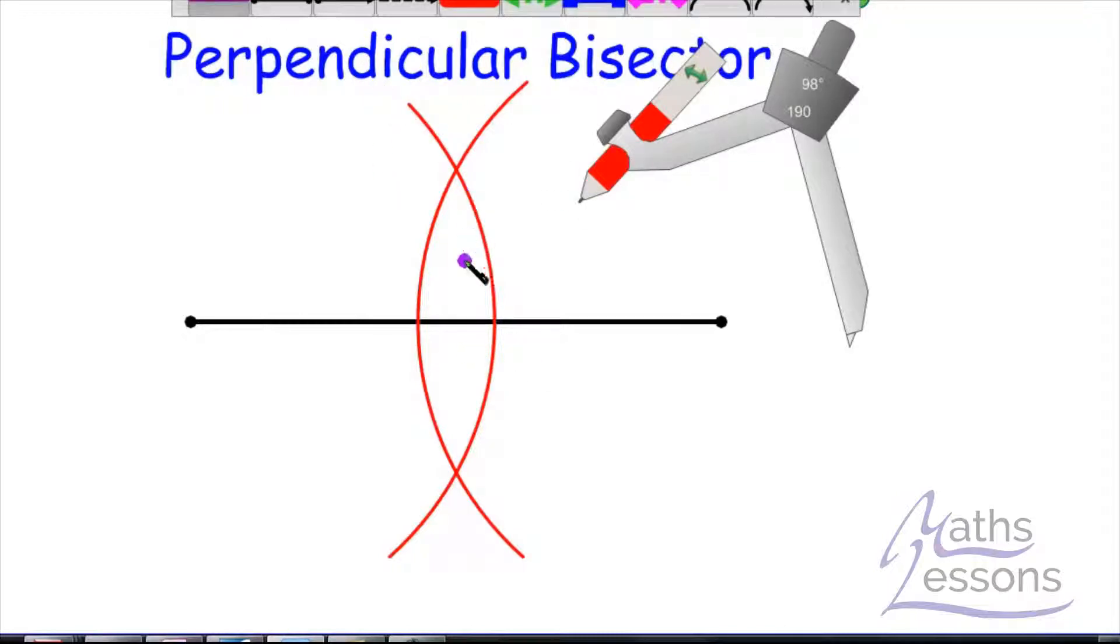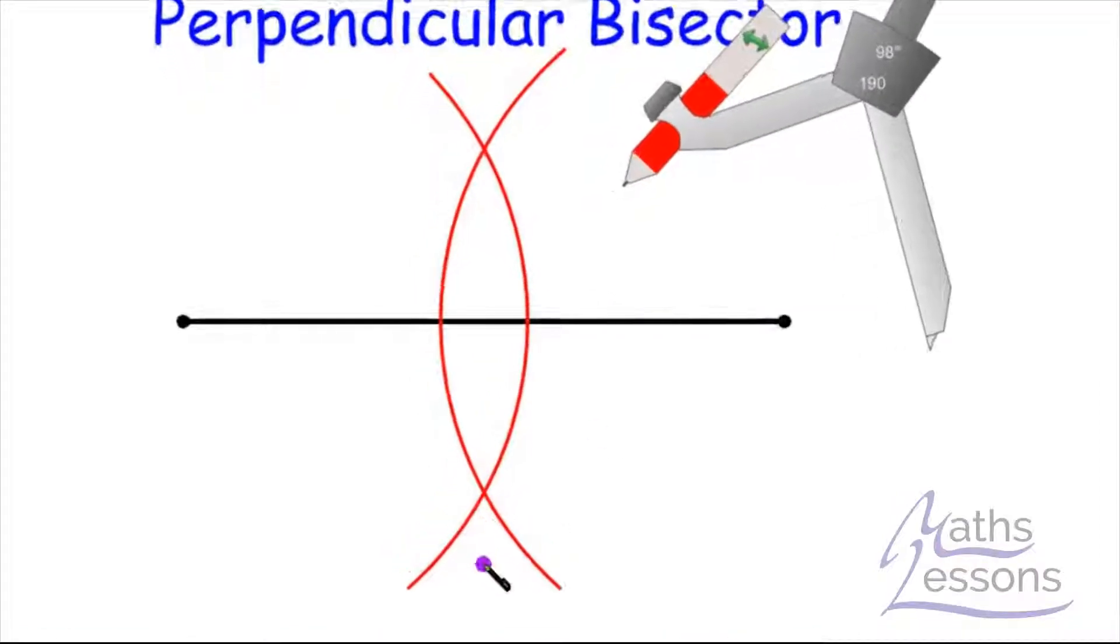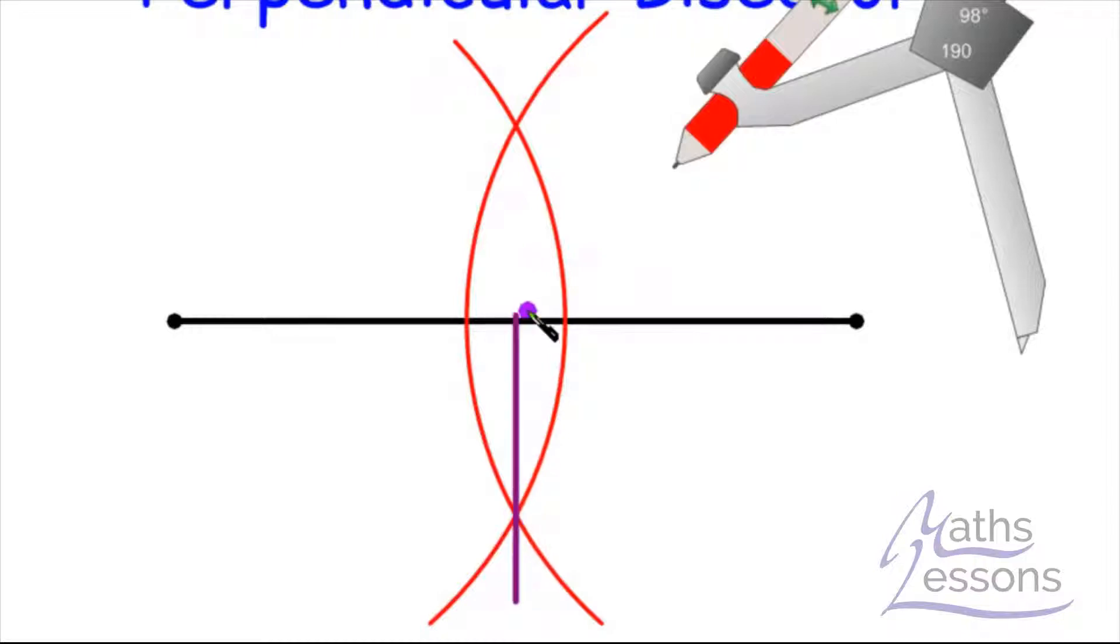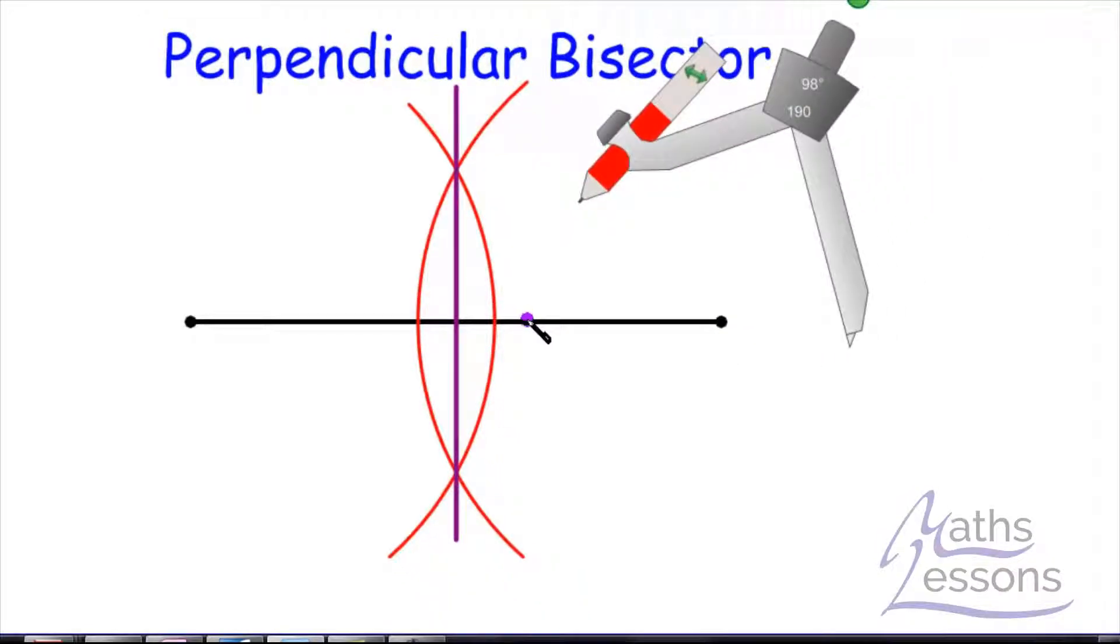So we can now draw this line between these two points. Let's just line it up and that line there gives us the perpendicular bisector of the black line. The purple line cuts the black line in half and is at right angles to it.